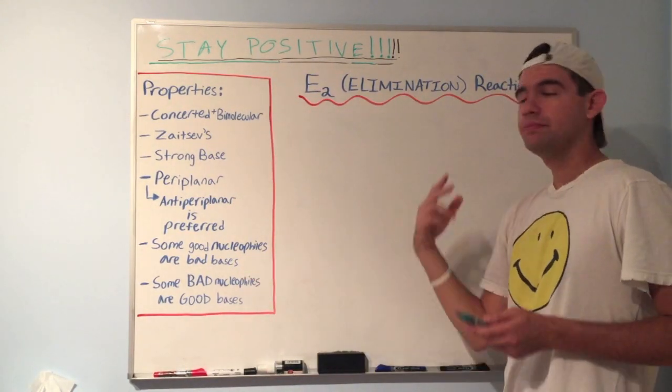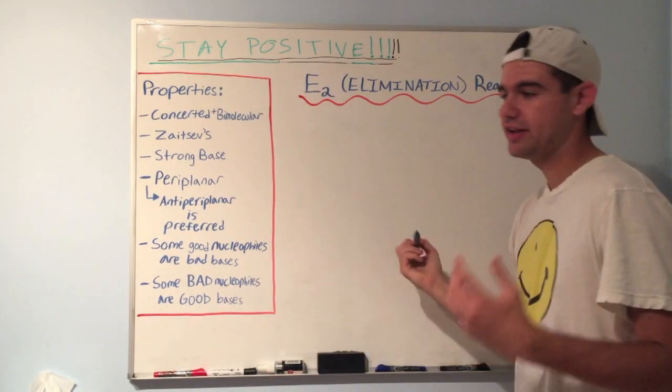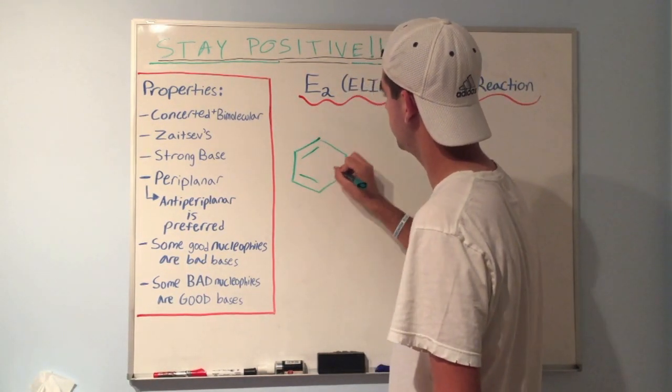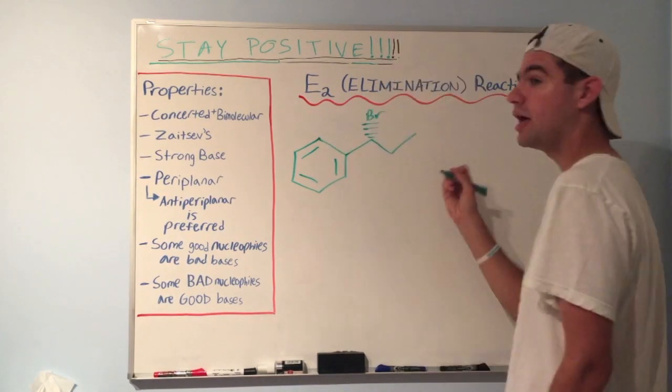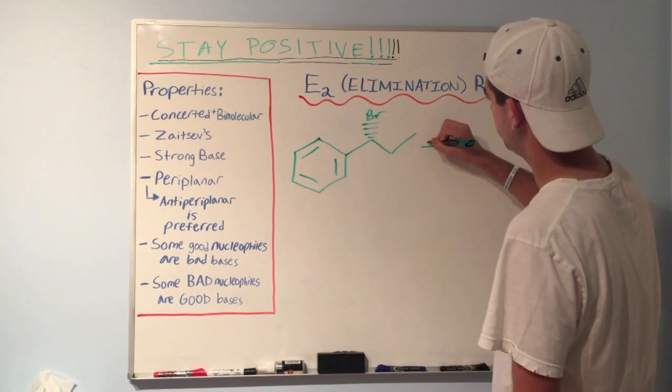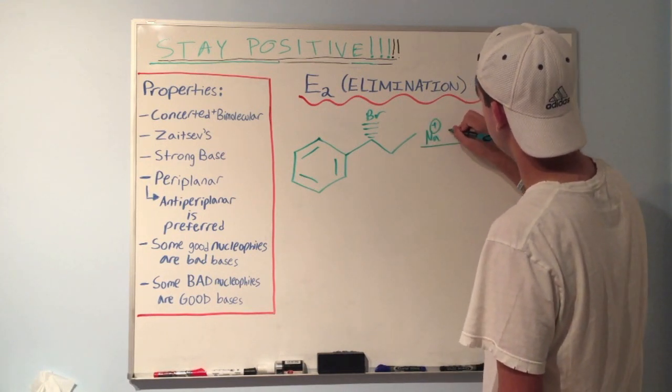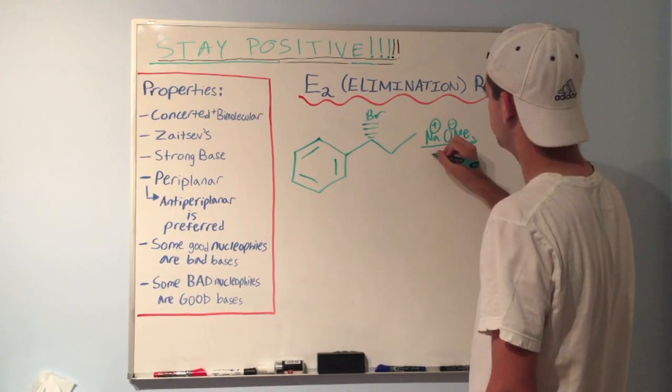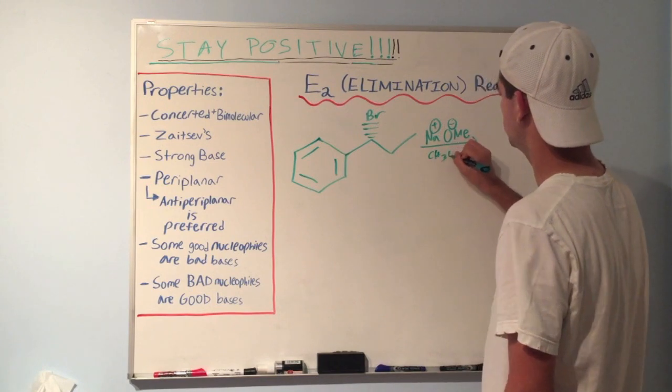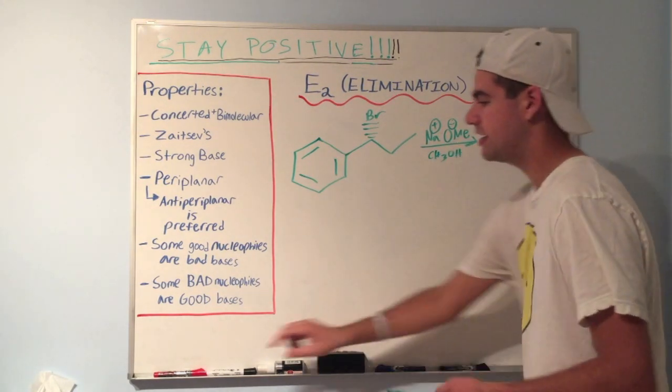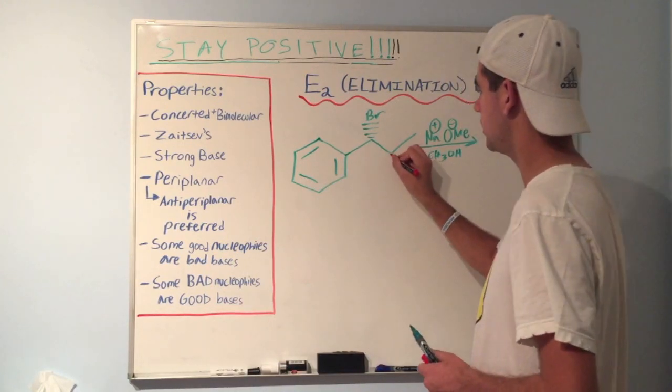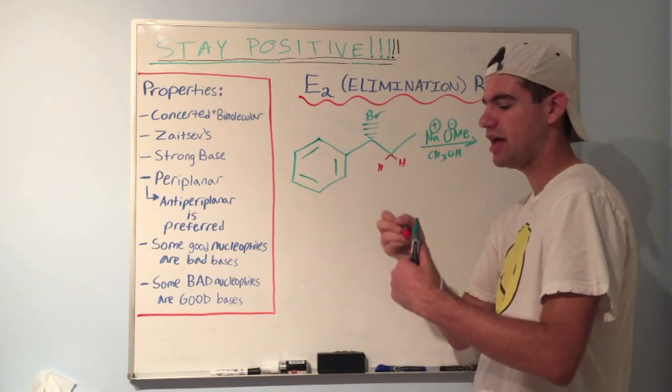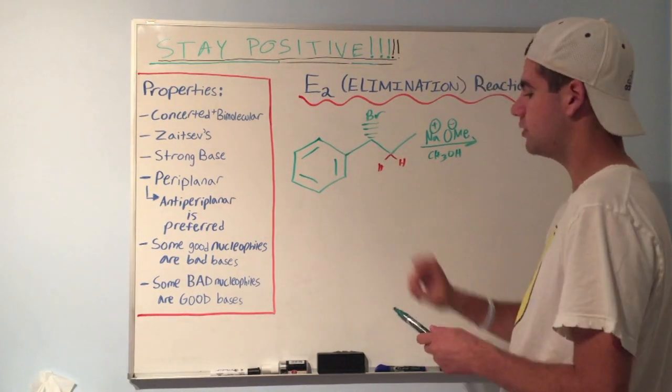Before I get into these details of E2, I wanted to show you a quick example of a basic E2 mechanism. So let's say we have this guy. And let's say we react this with some sodium methoxide in methanol solvent. What's going to happen? Let's identify our adjacent hydrogens first. That's always a good place to start. We have two right here. And do we have any over here? No. That carbon doesn't have any hydrogens attached to it. So those are our only two options.